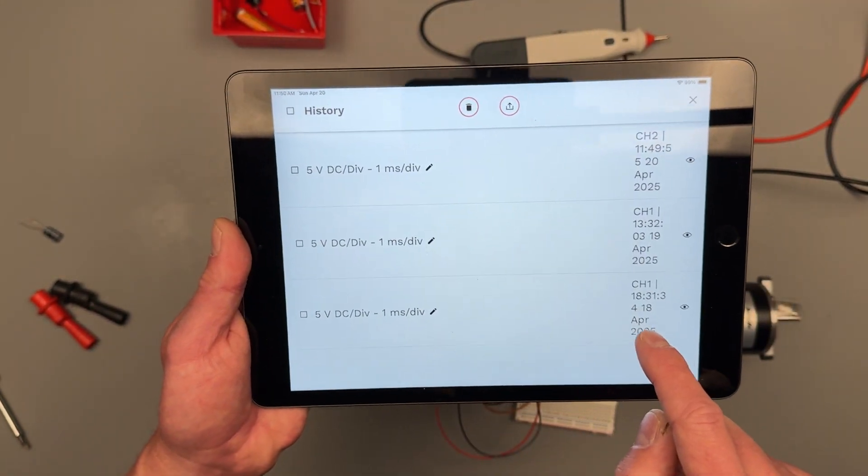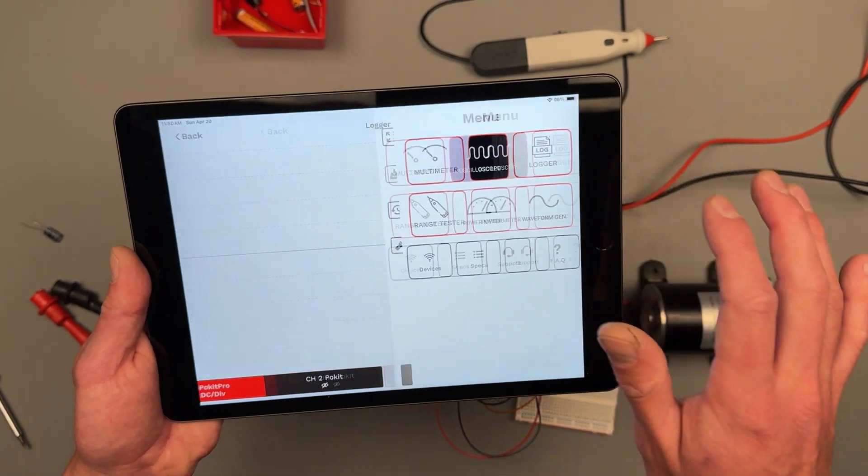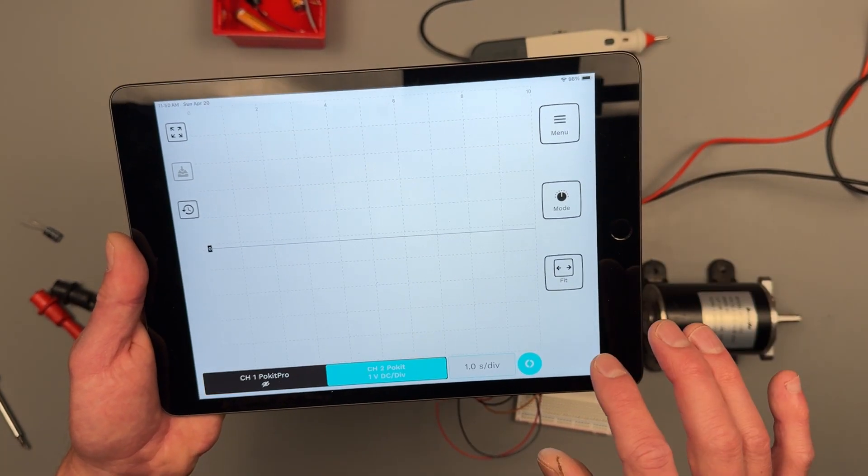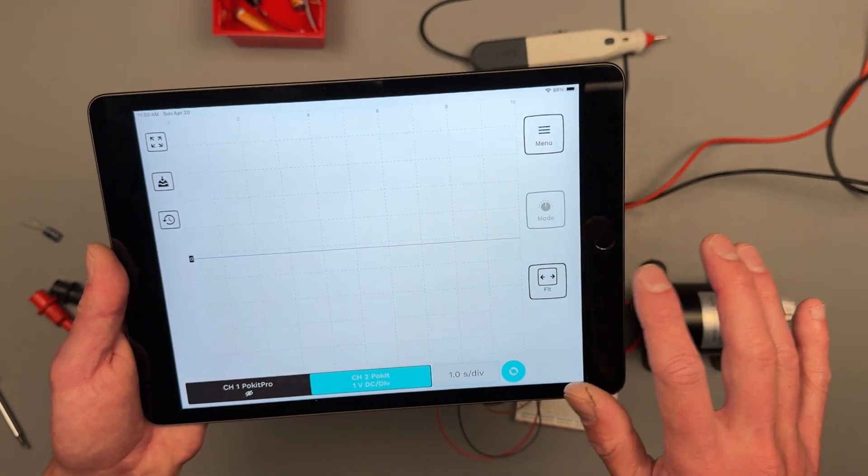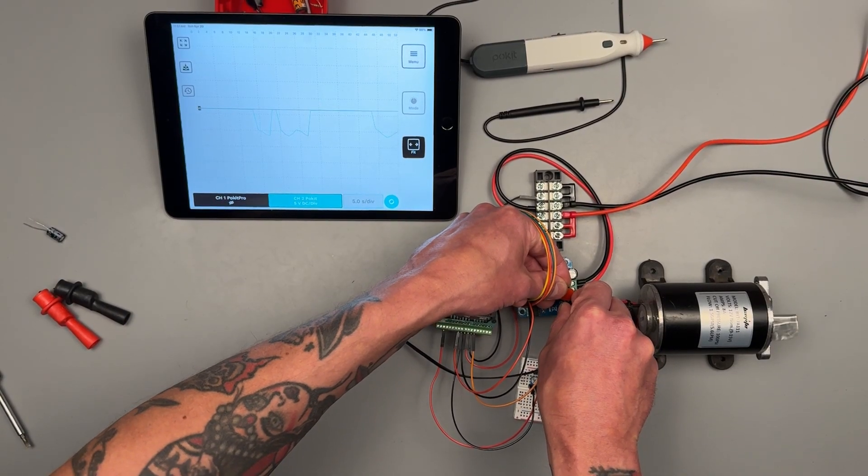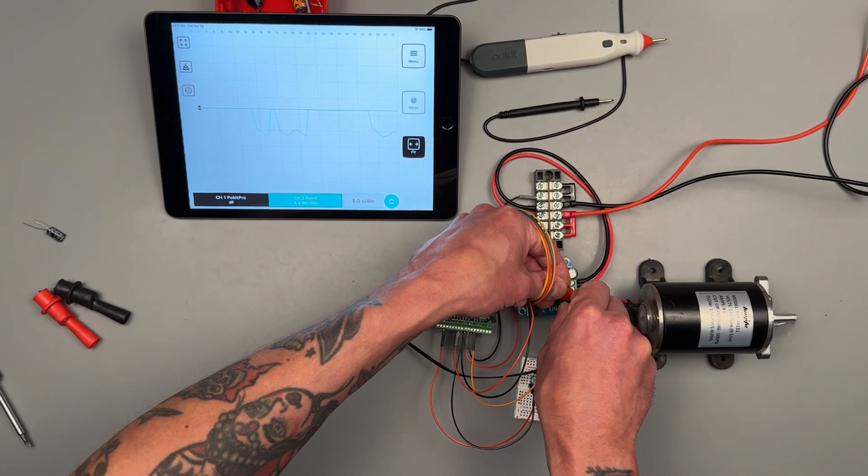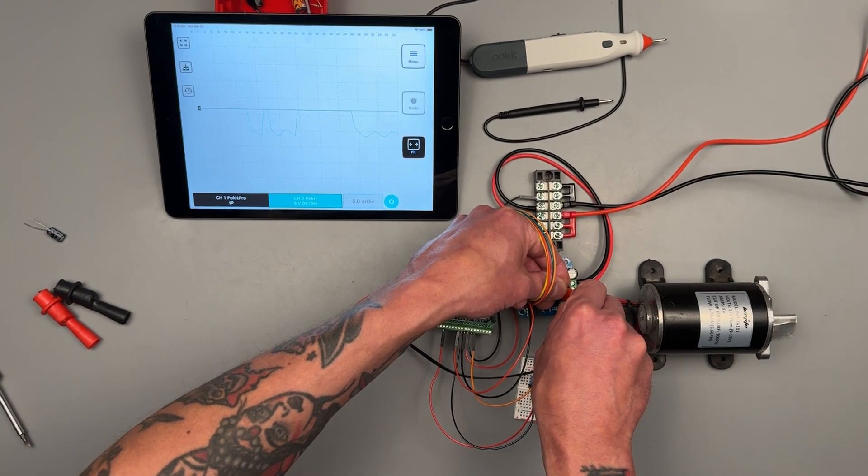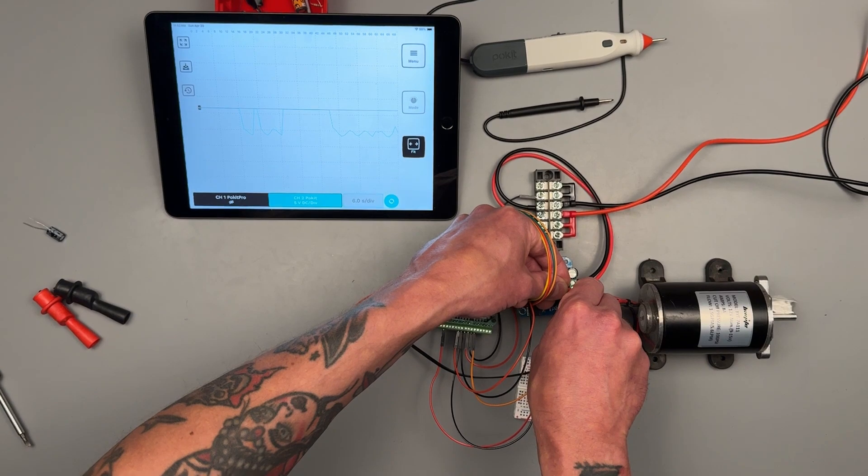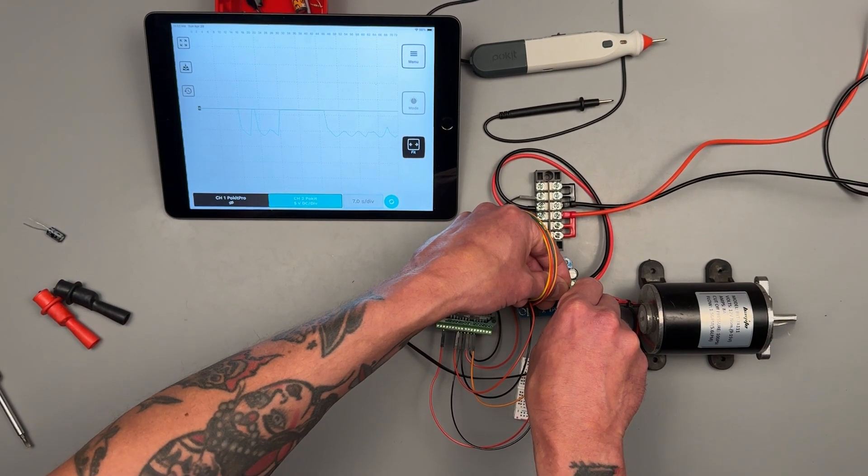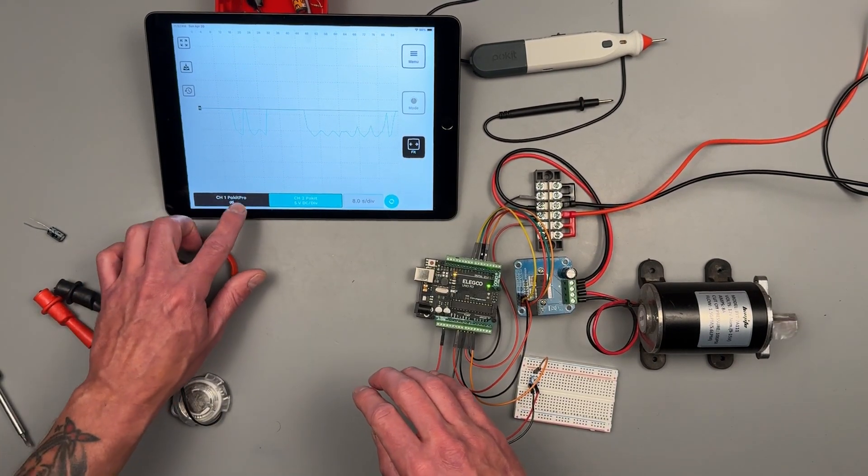Let's try the data logger and see what that looks like. Data logger should be similar to the scope but it should just be running. Data logger is going to be for like long-term kind of measurements - basically you're monitoring something so there's not a lot of detail in it. See how we can't see the individual waves? We're just looking at data over time.